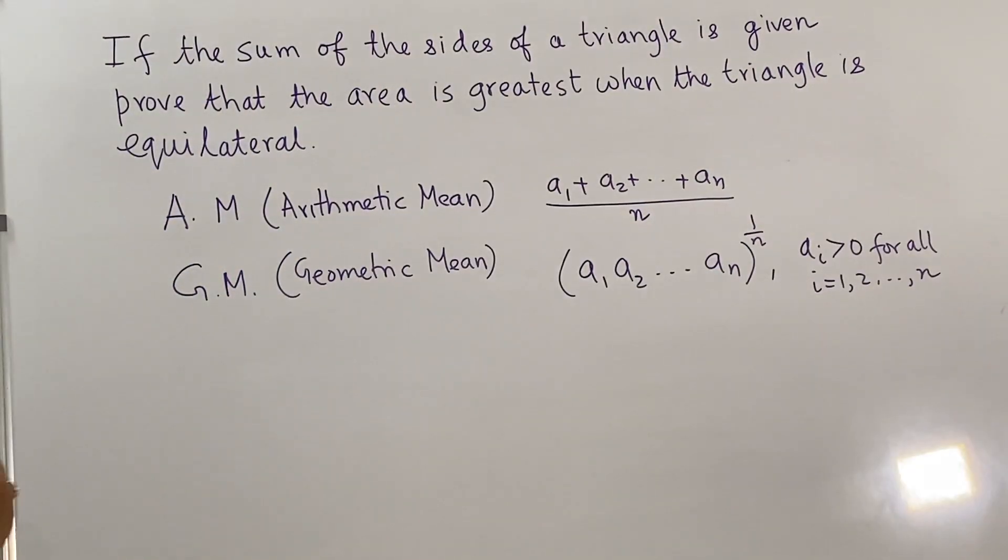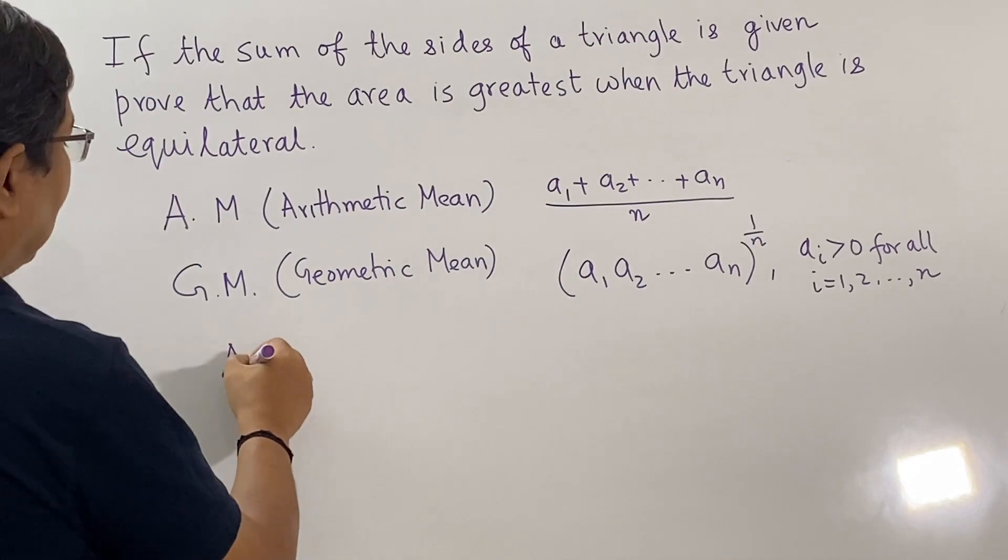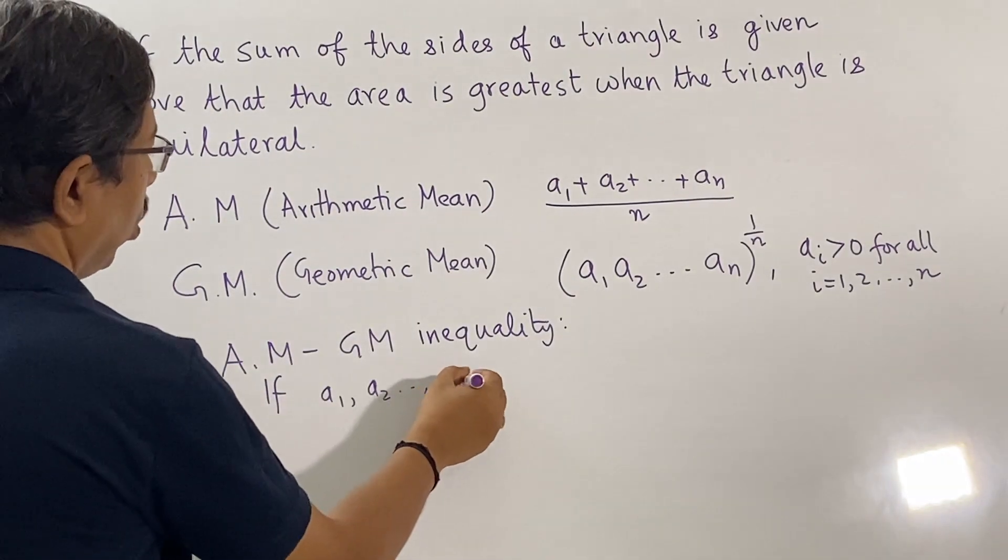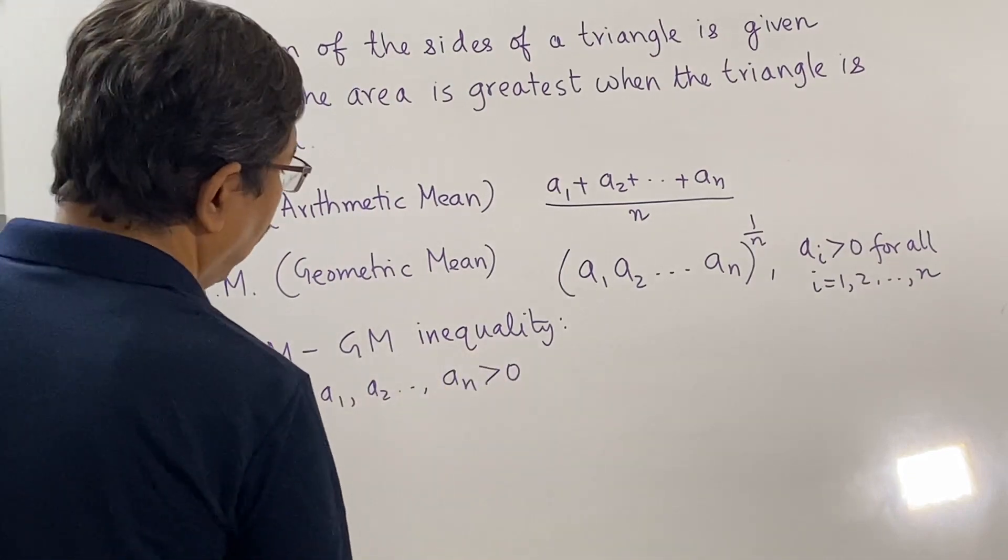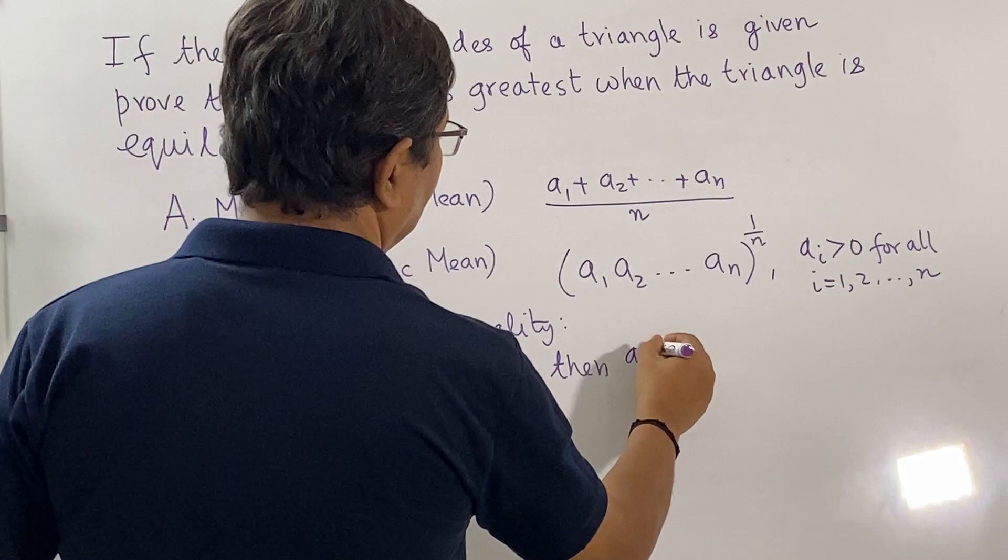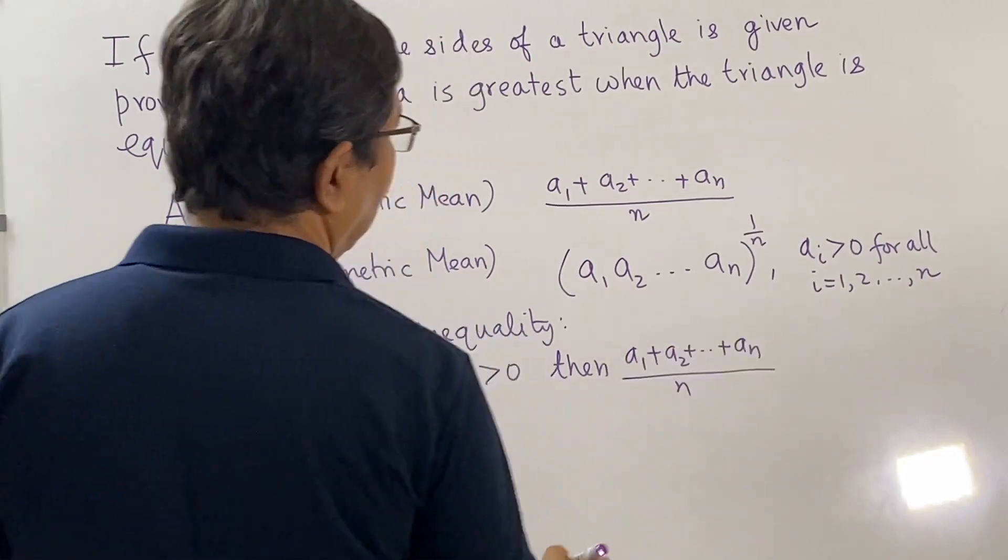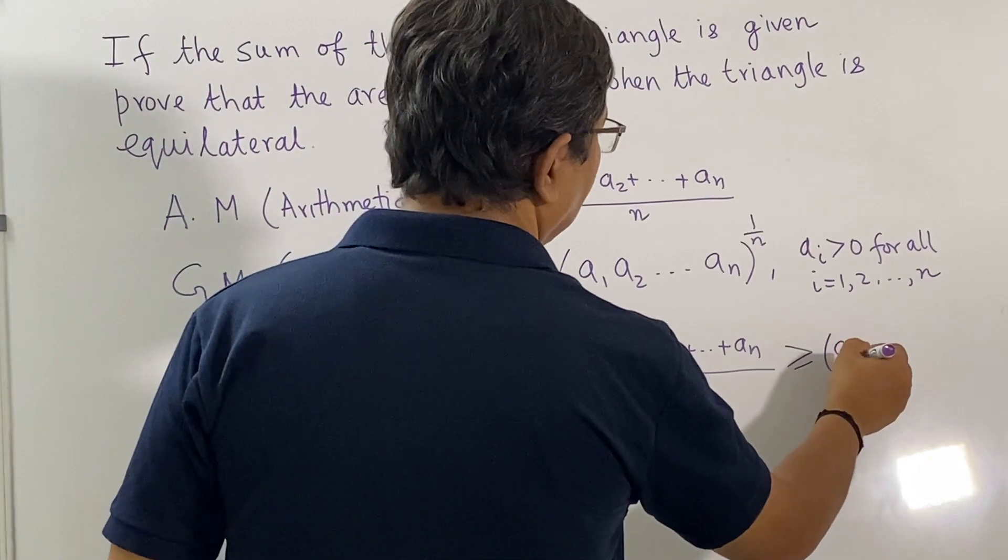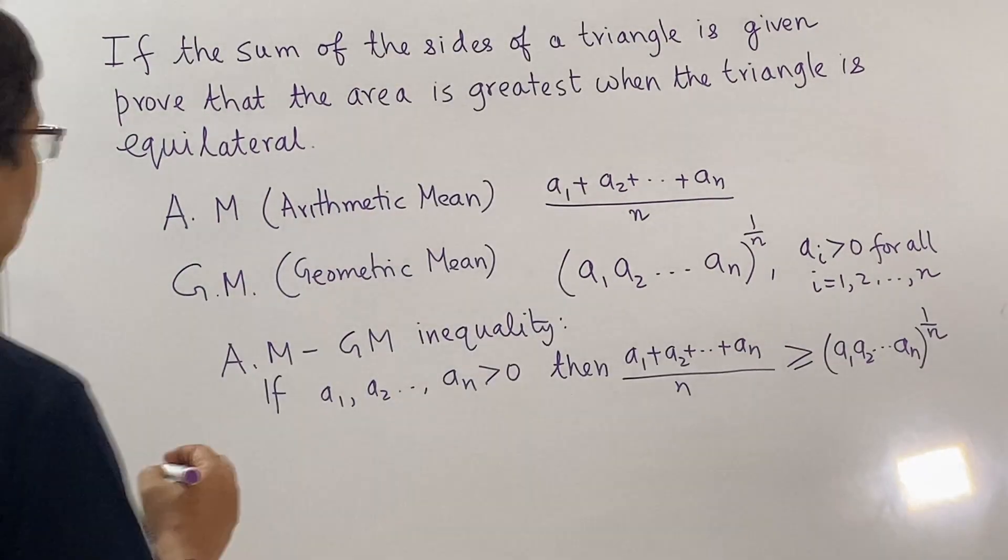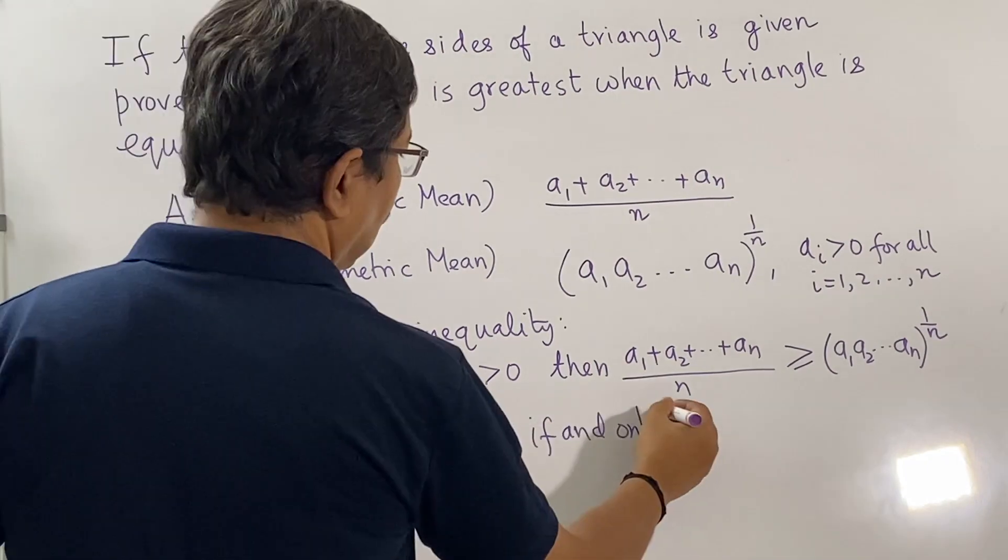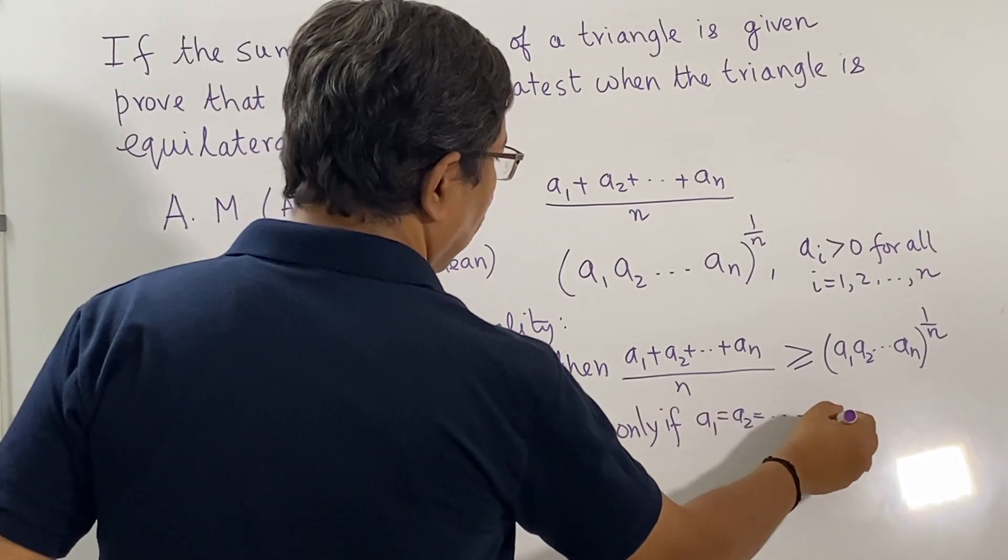The very well-known AM-GM inequality states that if we have N positive numbers, then the AM is greater than or equal to the GM. And the equality holds if and only if all these numbers are equal.